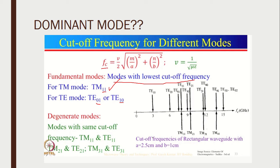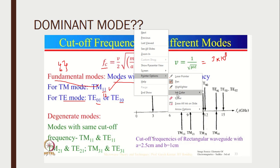The cutoff frequency formula uses V = 1 / √(με), which is the velocity of light (approximately 3×10⁸). M and N are the mode indices, and A and B are the waveguide dimensions — here A is 2.5 cm and B is 1 cm. Substituting M=1, N=1 gives a certain cutoff frequency value. Comparing the cutoff frequencies of various modes, TM11 has the lowest cutoff frequency and is therefore the fundamental or dominant mode of TM. Similarly for TE, TE01 and TE10 are shown to have the lowest cutoff frequency and are the dominant modes of the TE wave.